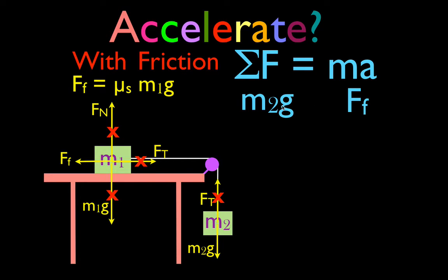If M2g is greater than the maximum possible friction force, then yes, these two objects will accelerate — M1 to the right, M2 down. If the friction force is greater, then the objects just won't move at all. Let's look at a couple of examples to see when the friction force might be greater, or when the weight of M2 might be greater and the objects would accelerate.